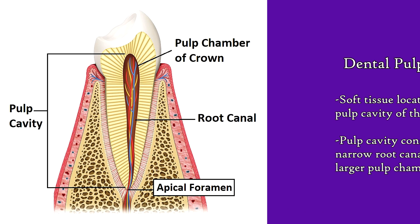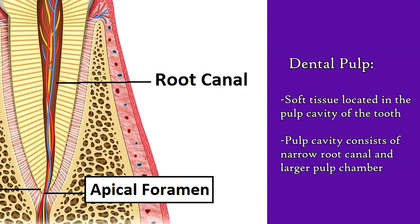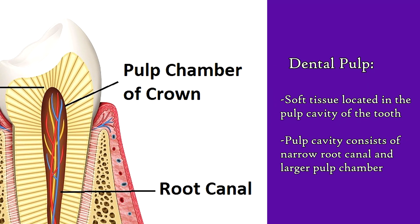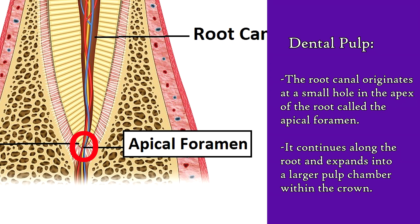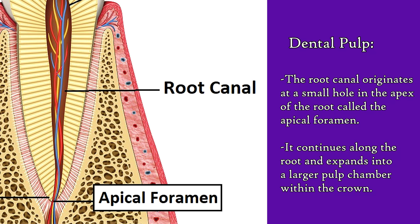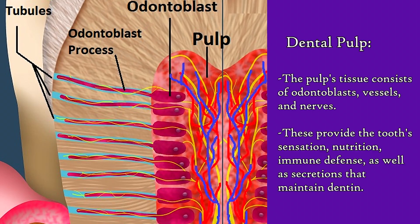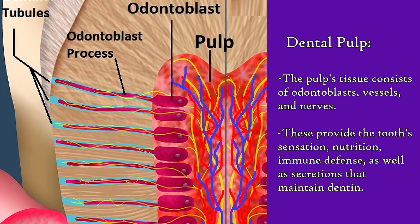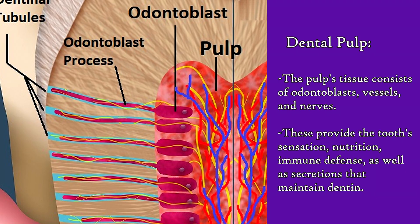Finally, the dental pulp is the last type of major tissue that makes up the tooth. This is a soft tissue located within the pulp cavity of each tooth. The pulp cavity has two main parts: the narrow root canal of the root or roots, and the larger pulp chamber located in the crown. The root canal originates at a small hole in the apex of the root called the apical foramen, and it travels up the root of the tooth and then expands into a larger pulp chamber within the crown. The pulp's tissue consists of odontoblasts, vessels, and nerves, which together supply the tooth's nutrition, sensation, and immune defense, as well as the secretions that maintain the dentin.